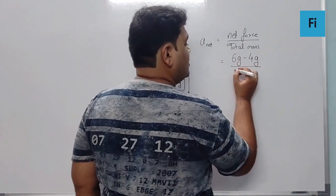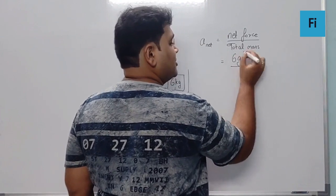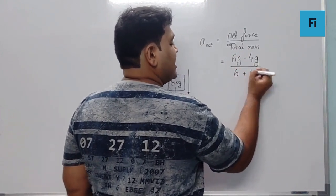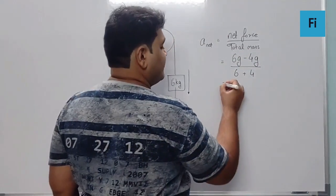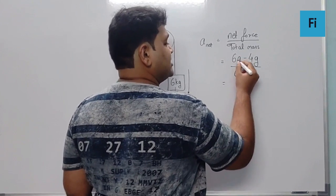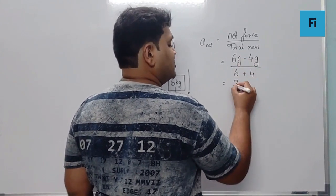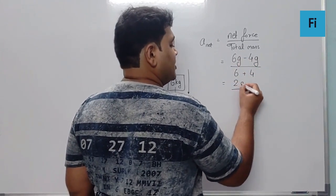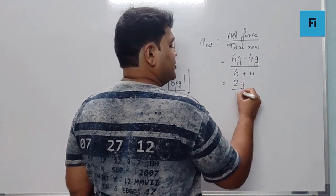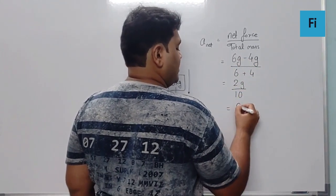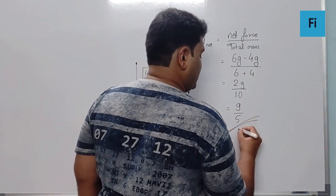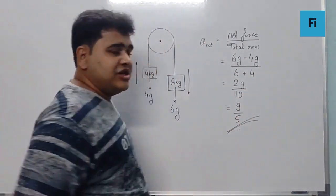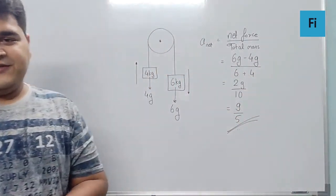Upon the total mass, 6 plus 4. So this will be 6g minus 4g, that is 2g, divided by 10. And so the final answer is going to be g/5.